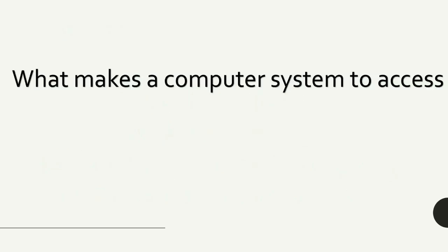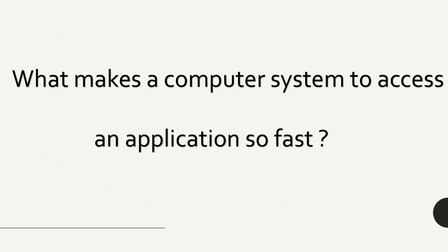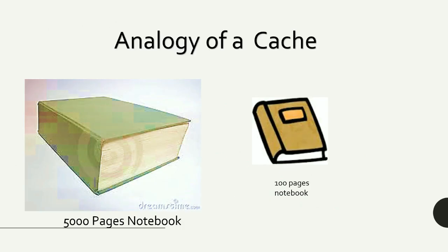Have you ever wondered what makes a computer system access an application so fast? One of the reasons is because of cache memory. Cache is a high-speed and small memory which holds frequently used information from the main memory.